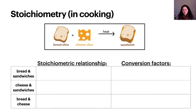The stoichiometric relationships in a chemical equation are analogous to the relationships between amounts of ingredients in cooking. Let's use a simple example of cooking a grilled cheese sandwich to illustrate how we can use the stoichiometric relationships. We will use the recipe of two slices of bread and one slice of cheese to make one grilled cheese sandwich. We can write this recipe in the same form as a chemical equation. To balance the equation, we need the coefficient two in front of bread and the coefficient one for cheese and for sandwich. The coefficient one is usually not written explicitly. The balanced equation reveals the stoichiometric relationships between bread, cheese, and sandwiches.